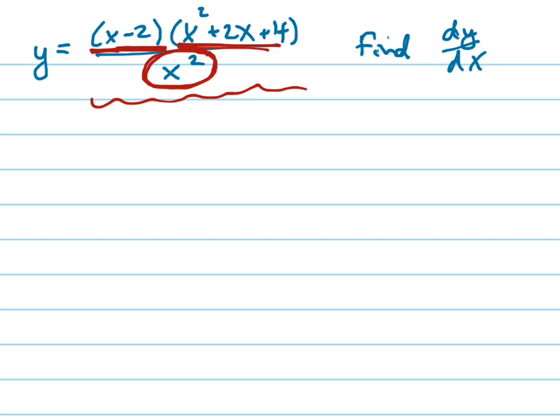If this said something like x squared plus 1, then you can't do that. You'd have to use the product rule and quotient rule. So let's simplify this. Remember, we're still just simplifying y right now.